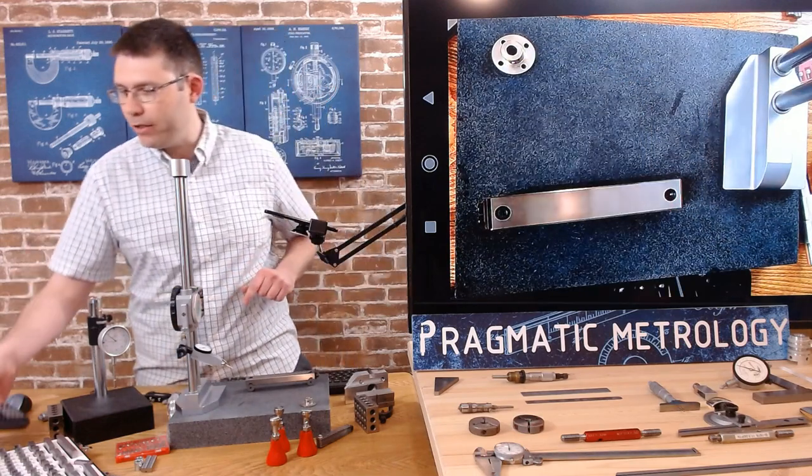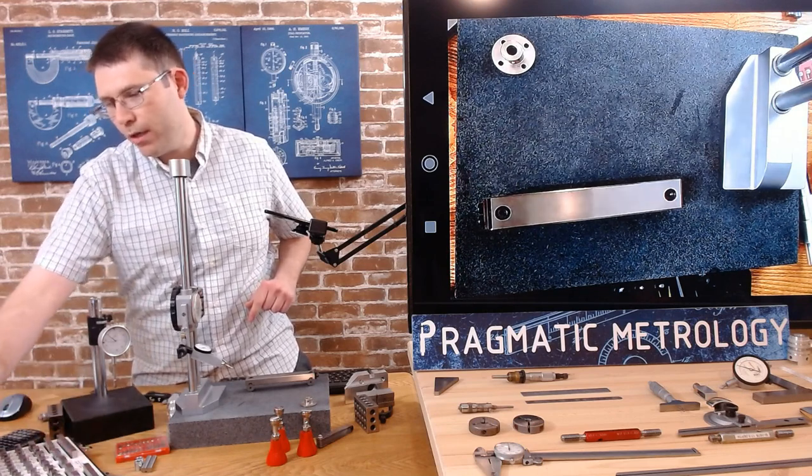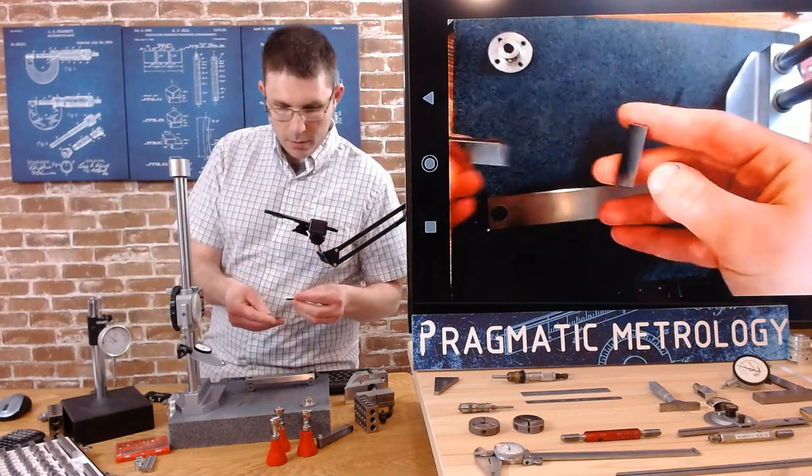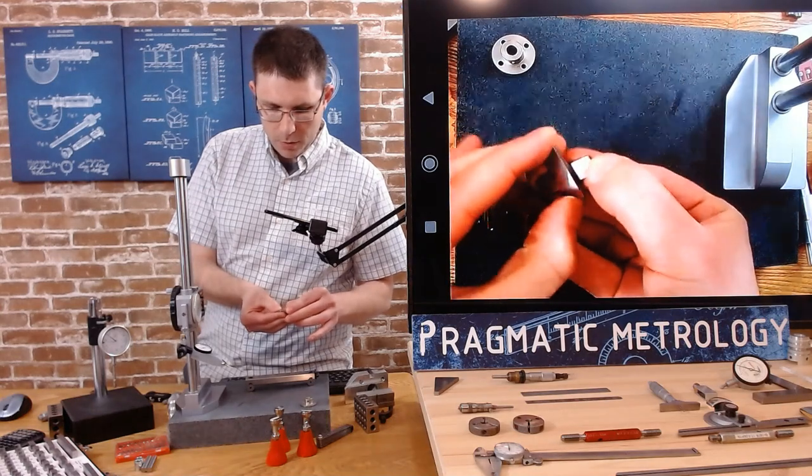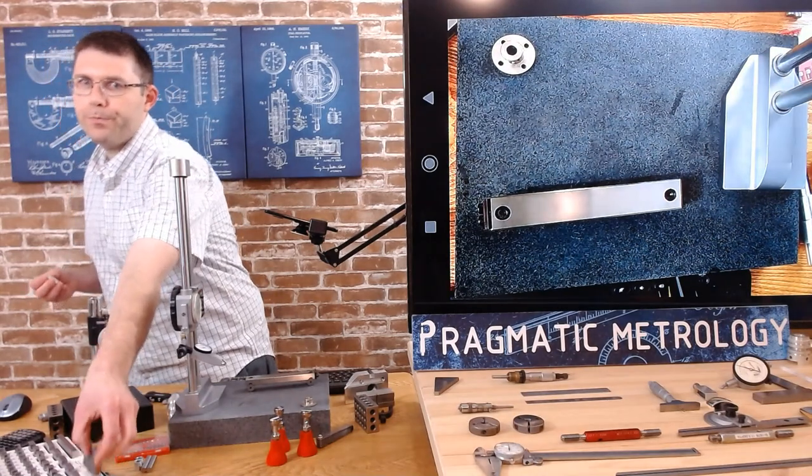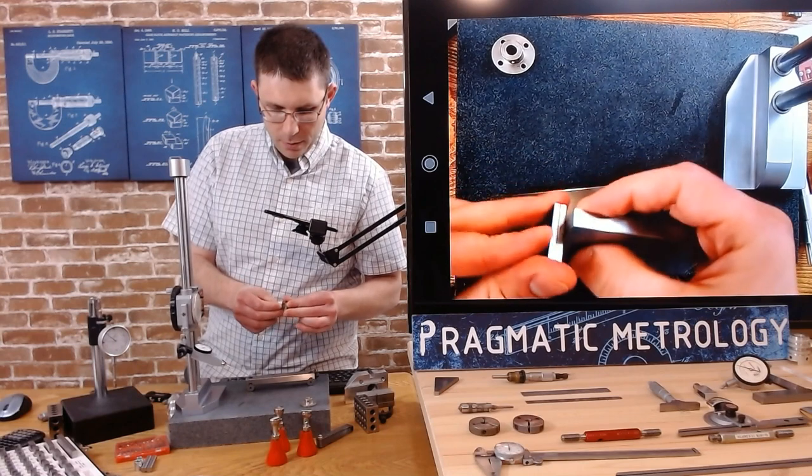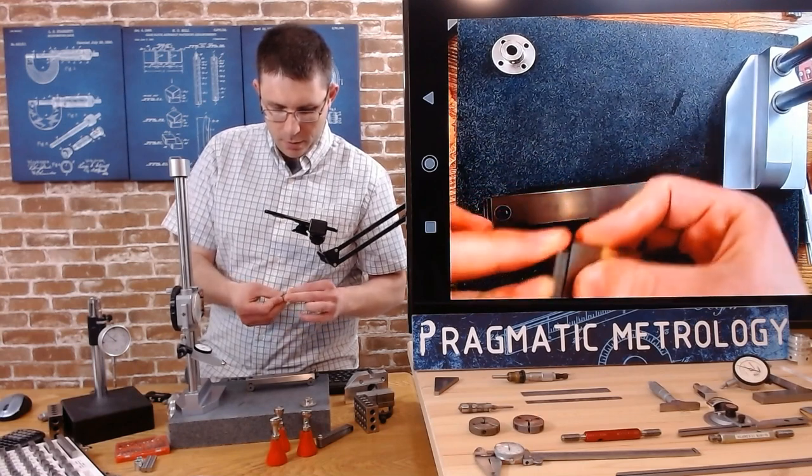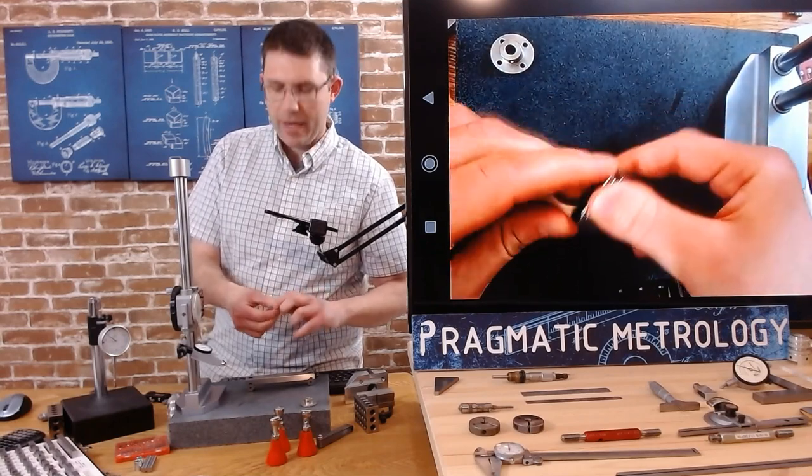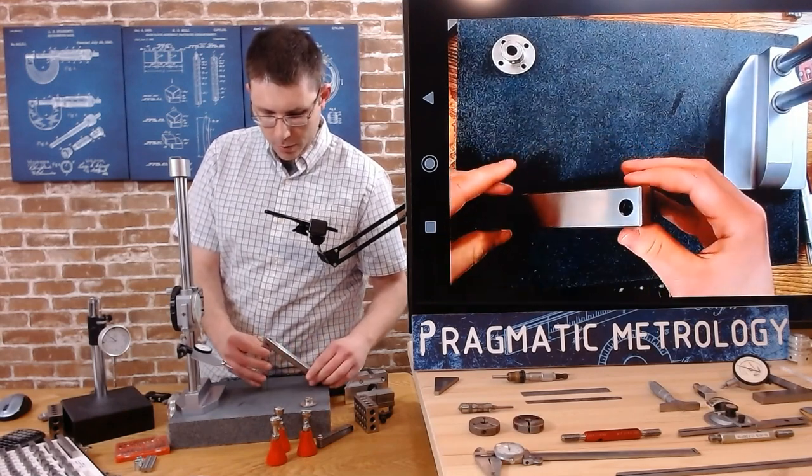So we need to get to 0.2139. We're going to use the 0.1009 and the 0.113, and we'll assemble them together like this, make a little cross and then twist, and then we need the 3 inch. Normally I'd verify these stacks but I've been using these blocks all week and haven't had any issues, so I'm going to just trust them.